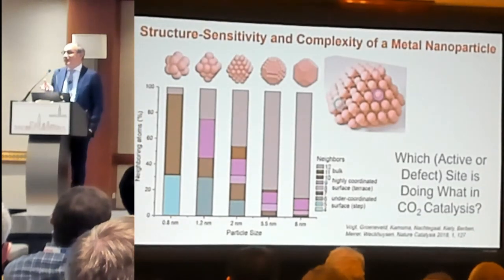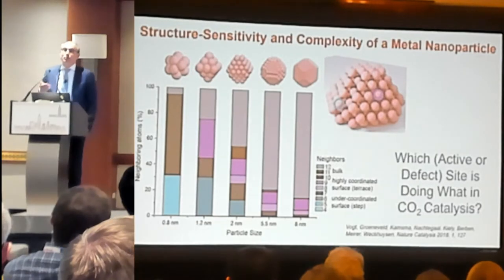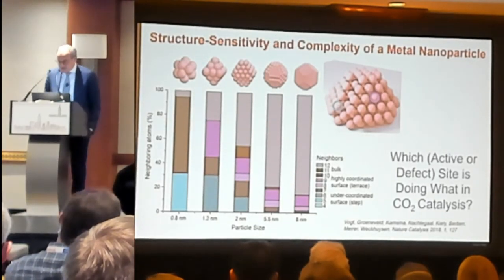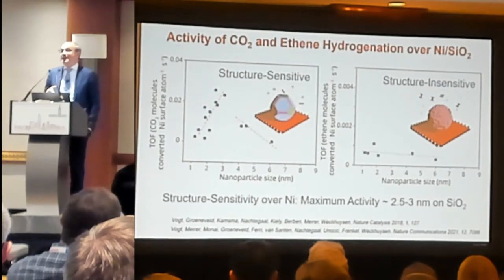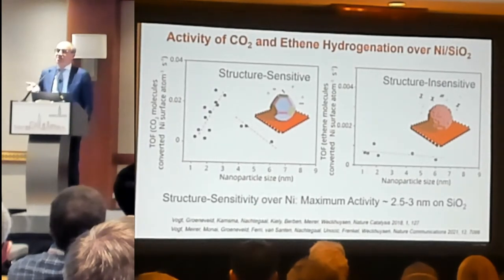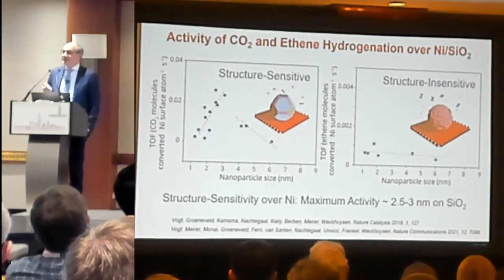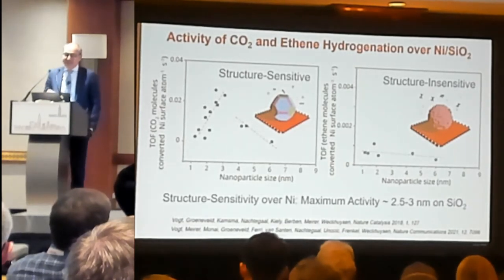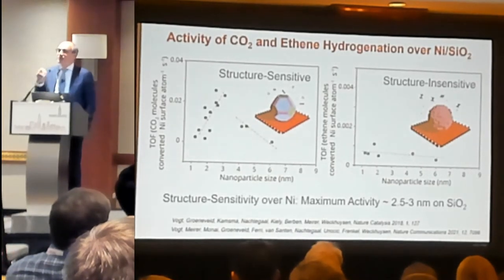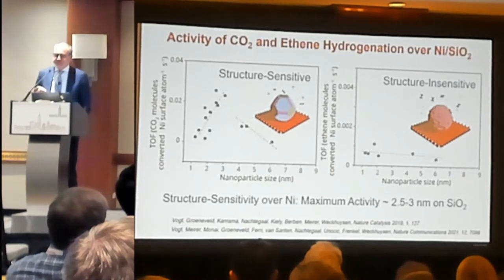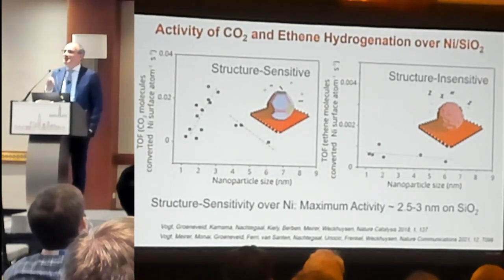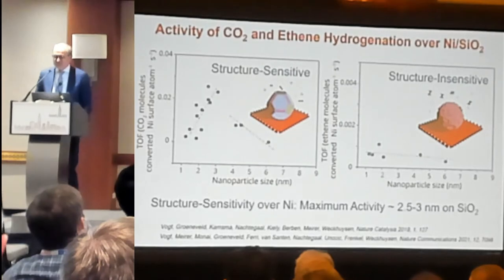What we have done for CO2 hydrogenation is to use nickel metal nanoparticles on a silica support and change the metal nanoparticle size. When you do that, you see the turnover frequency — CO2 molecules converted per nickel surface atom per second — it goes up and then somehow drops. For comparison, I show you a structure-insensitive reaction, which is ethane hydrogenation — it is almost flat.